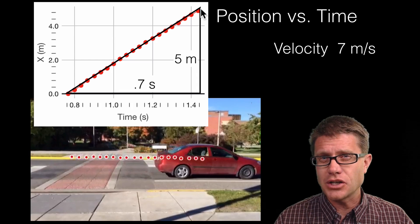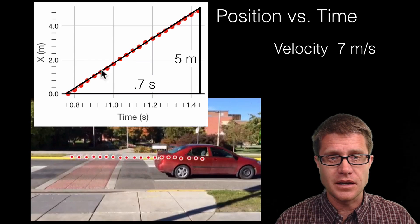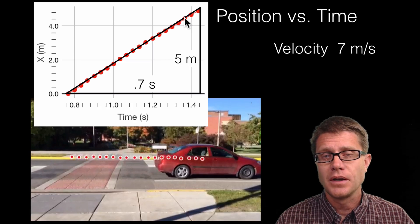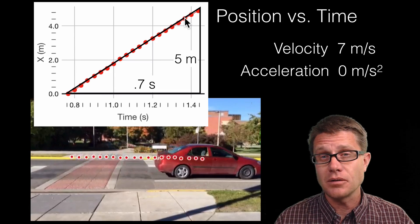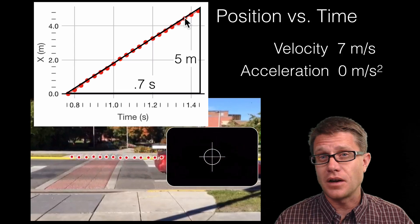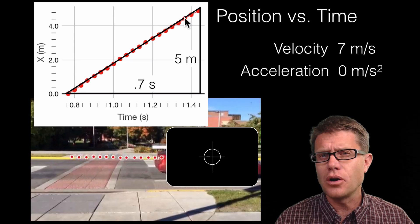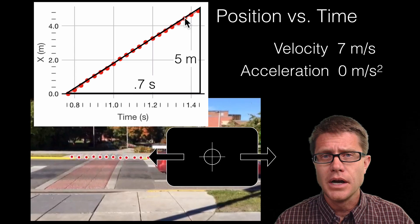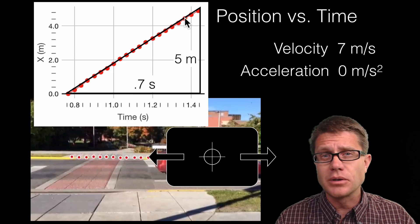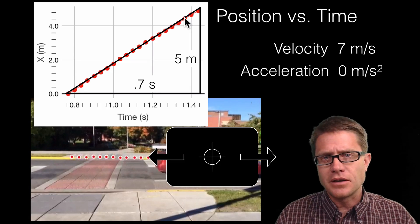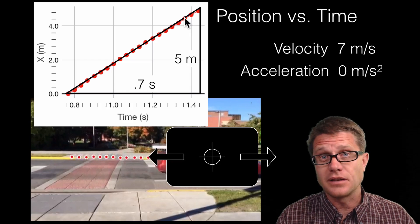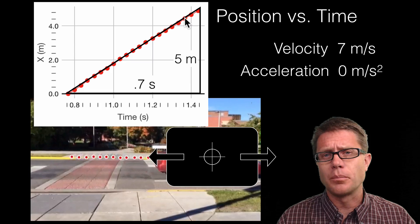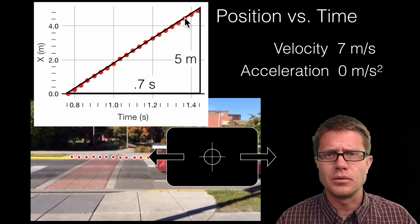What is the acceleration of the car? Since the velocity is always the same and never changing, the acceleration equals zero. That means there is no net force acting on the car. Are there forces acting on the car? For sure — there is friction and air resistance slowing it down, and the wheels moving it to the right. But they are all equal, so those are balanced forces and there is no acceleration.